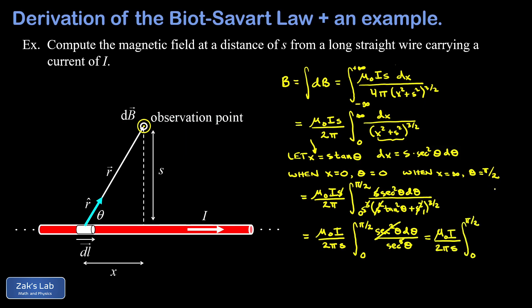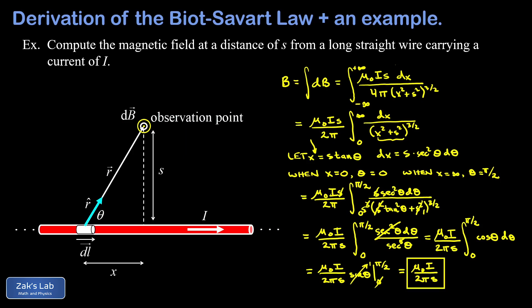The antiderivative of cosine is sine, so we evaluate sin(θ) from 0 to π/2: sin(π/2) − sin(0) = 1 − 0 = 1. The integral equals 1, and we arrive at the final answer: the magnetic field at a distance s from a long straight wire is B = μ₀·I / (2π·s).